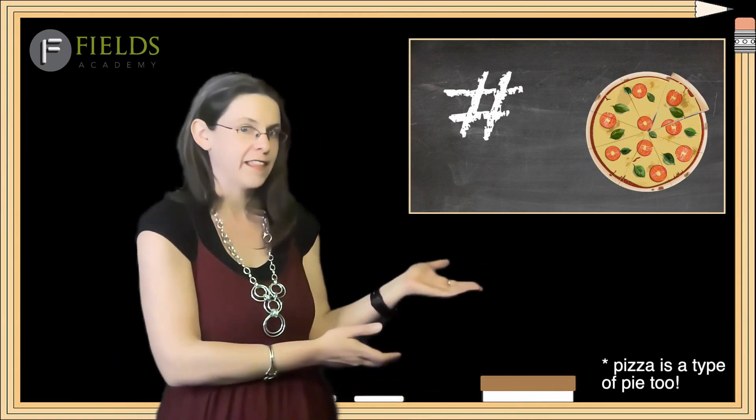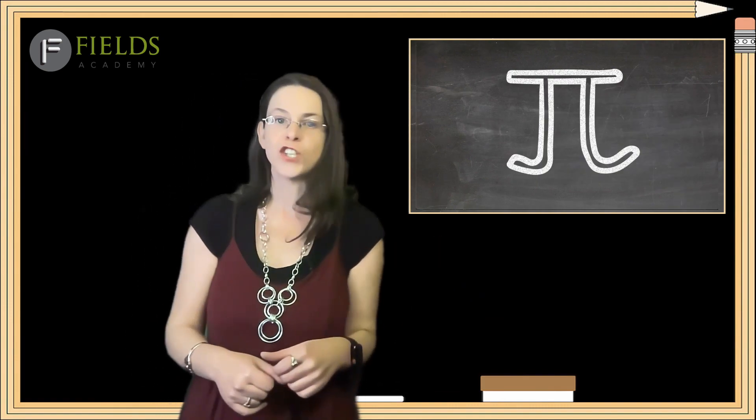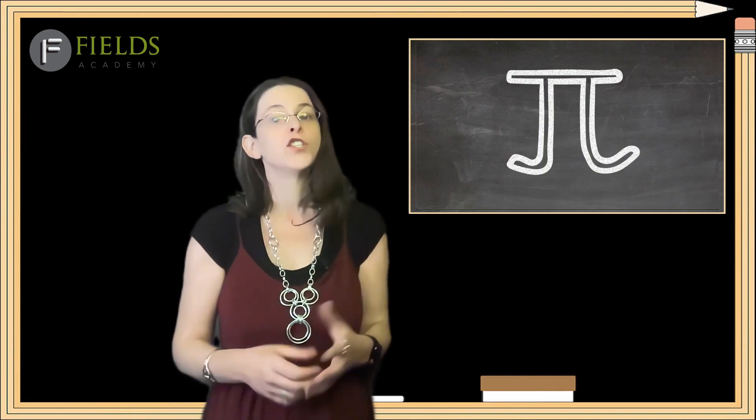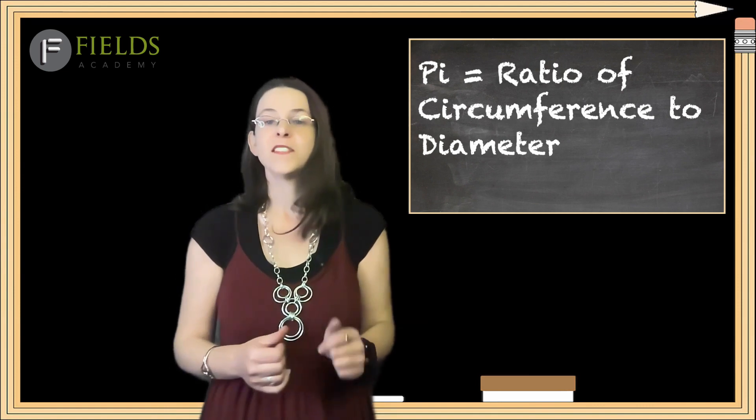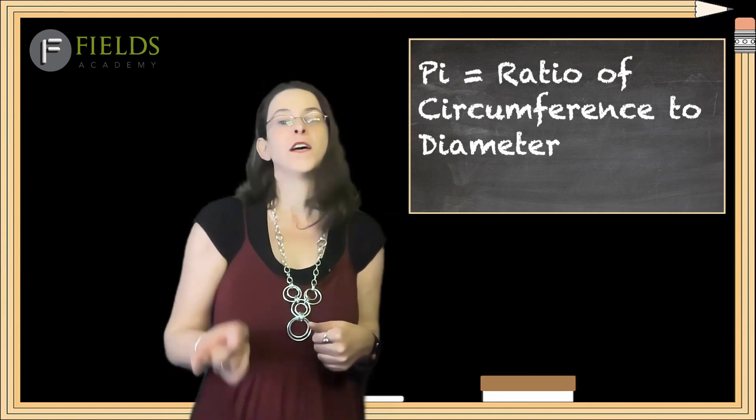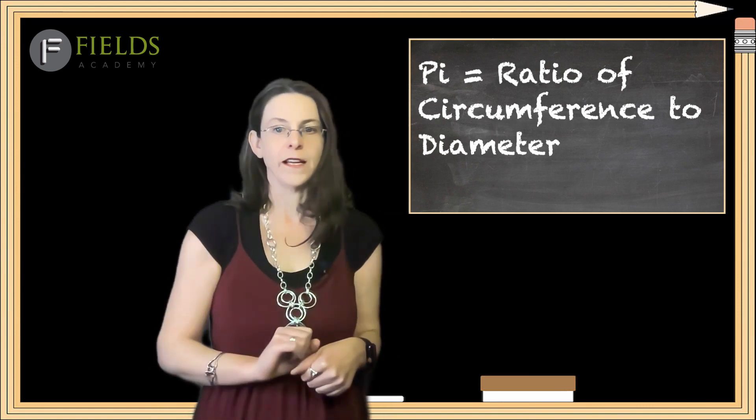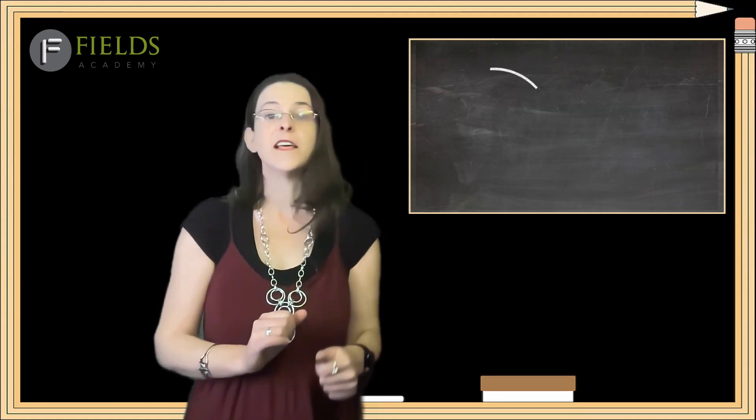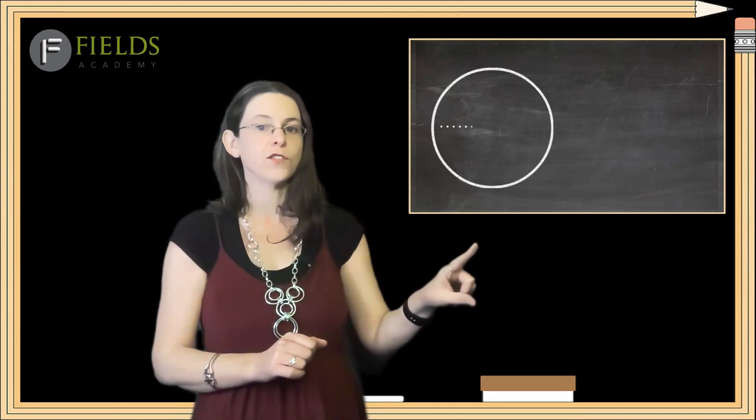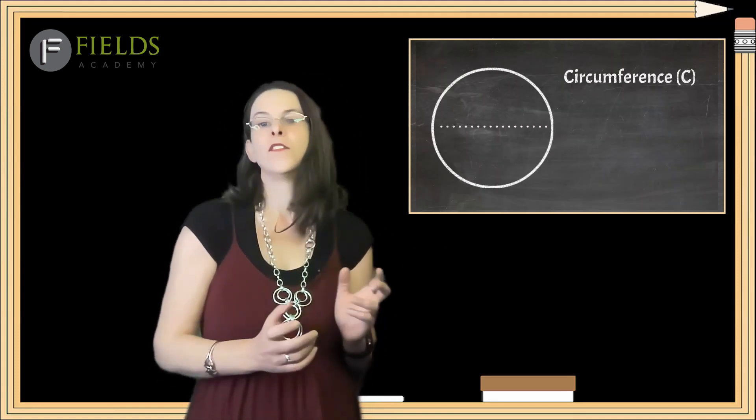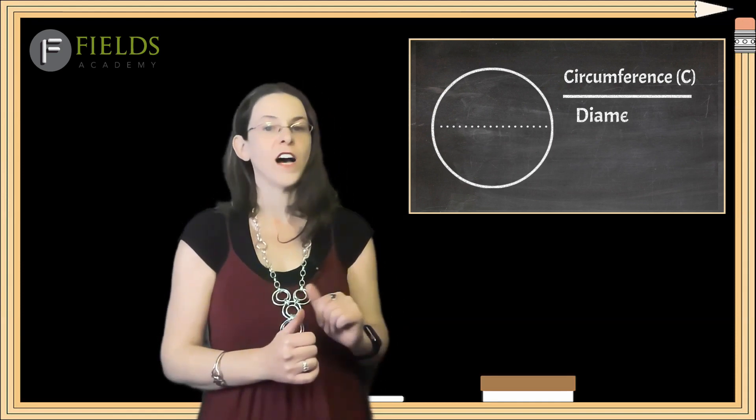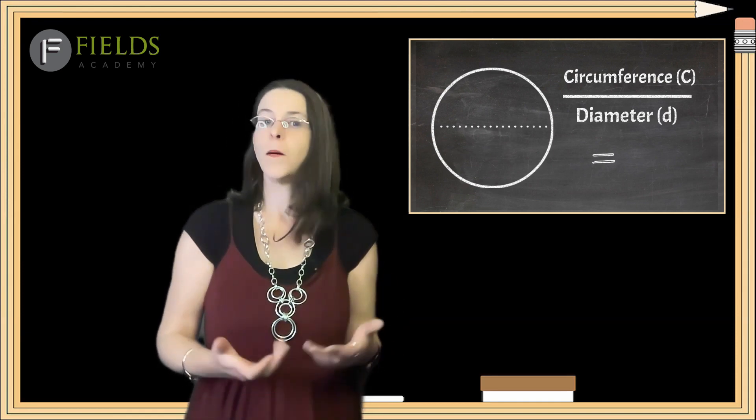the Greek letter that looks like this, is the ratio of the circumference of a circle to its diameter. This means if we draw a circle, measure the perimeter around its outside, the circumference, and then measure the distance across the circle through the middle, the diameter, and then divide the two, we get pi.